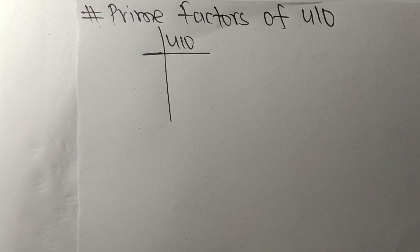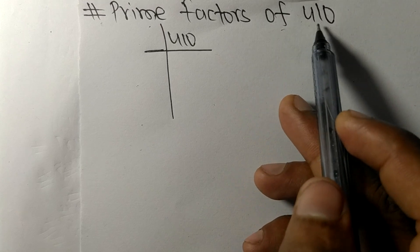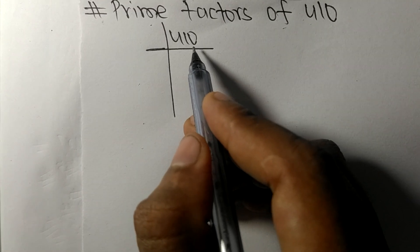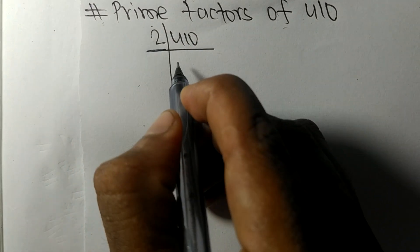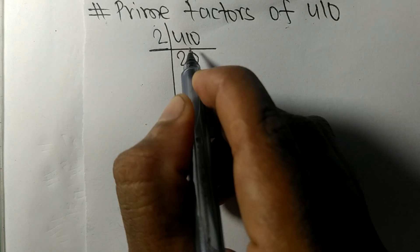Today in this video we shall learn to find the prime factors of 410. It ends in 0, so it is divisible by 2. 2 times 2 means 4, 2 times 0 means 0.